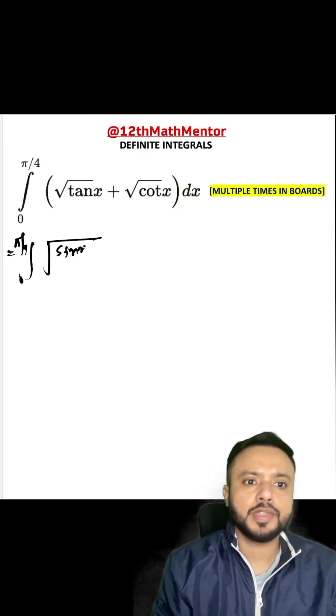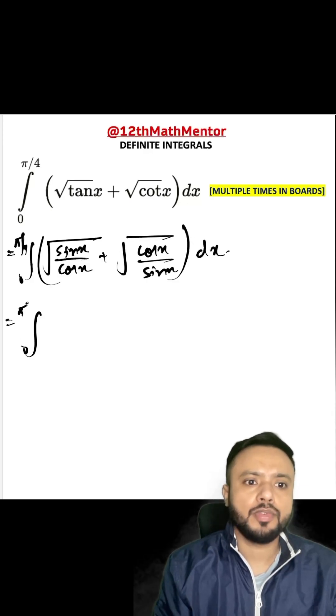It would be root of sine x upon cos x plus root of cos x upon sine x dx from 0 to π/4. Now I'm going to take LCM in the denominator.